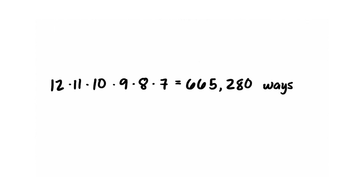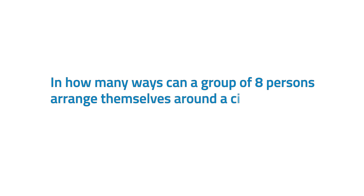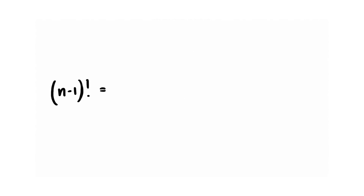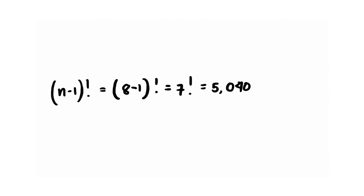Let's have another one. In how many ways can a group of 8 persons arrange themselves around a circular table? Using the circular permutation formula, there are 5,040 ways a group of 8 persons can arrange themselves around a circular table.